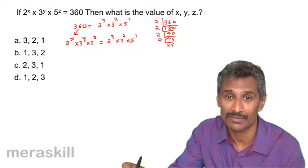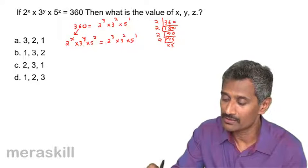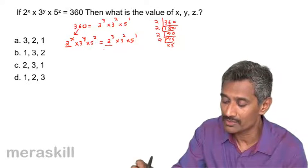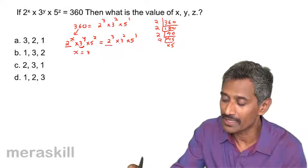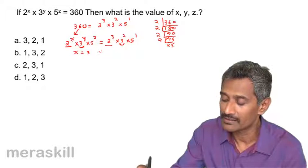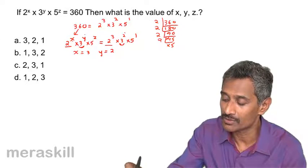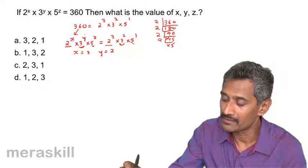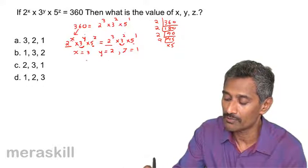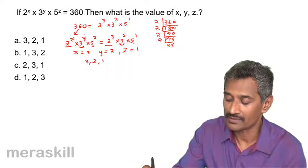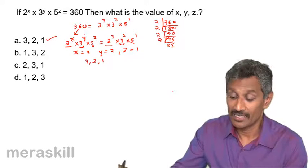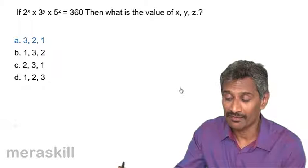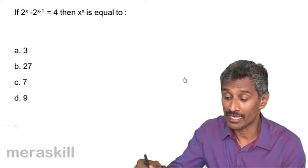Comparing 2 raised to x with 2 cubed, bases are equal so x equals 3. Similarly, 3 raised to y equals 3 squared, so y equals 2. And z equals 1. So the combination is x equals 3, y equals 2, z equals 1. Let's verify — yes, that is the right option.